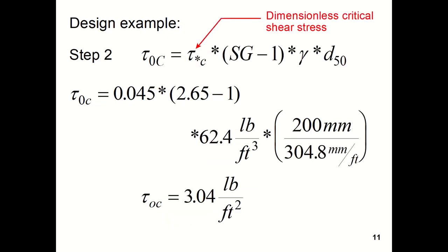Step 2 is to determine the critical value of the shear stress. And that's obtained by taking τ*c, which is the dimensionless critical shear stress, multiplying by the specific gravity of the sediment minus 1, times the specific weight of the water, times D₅₀.